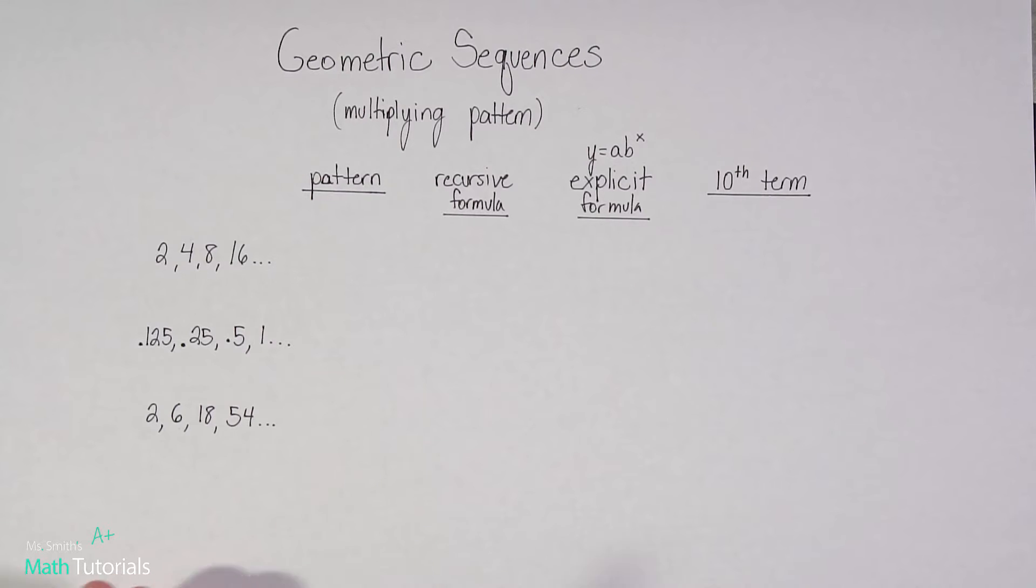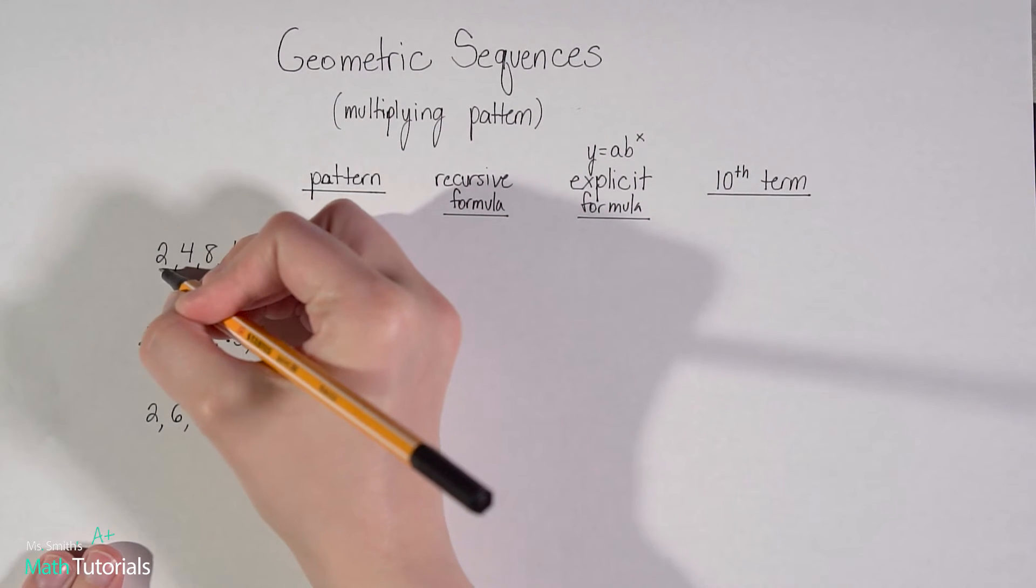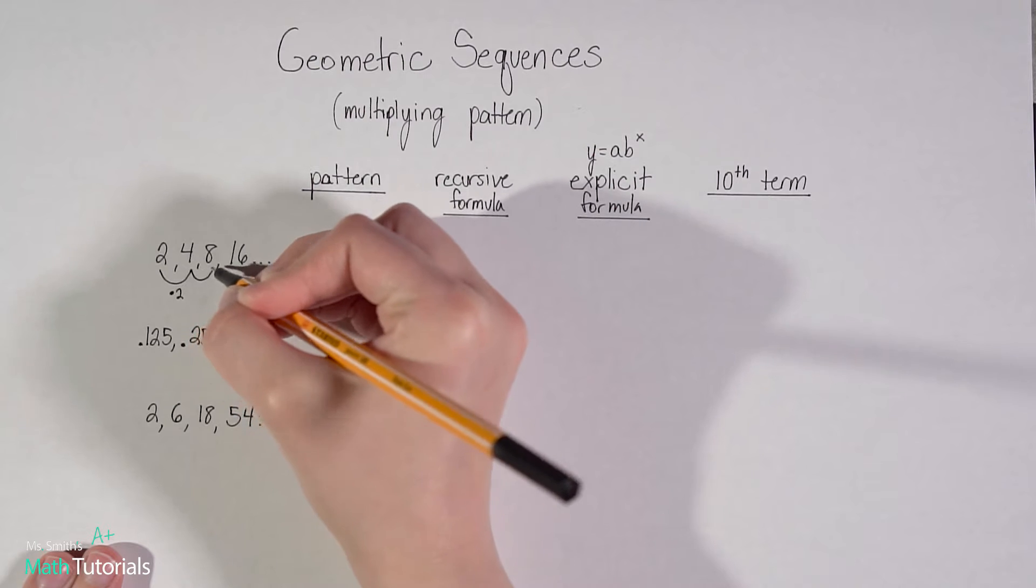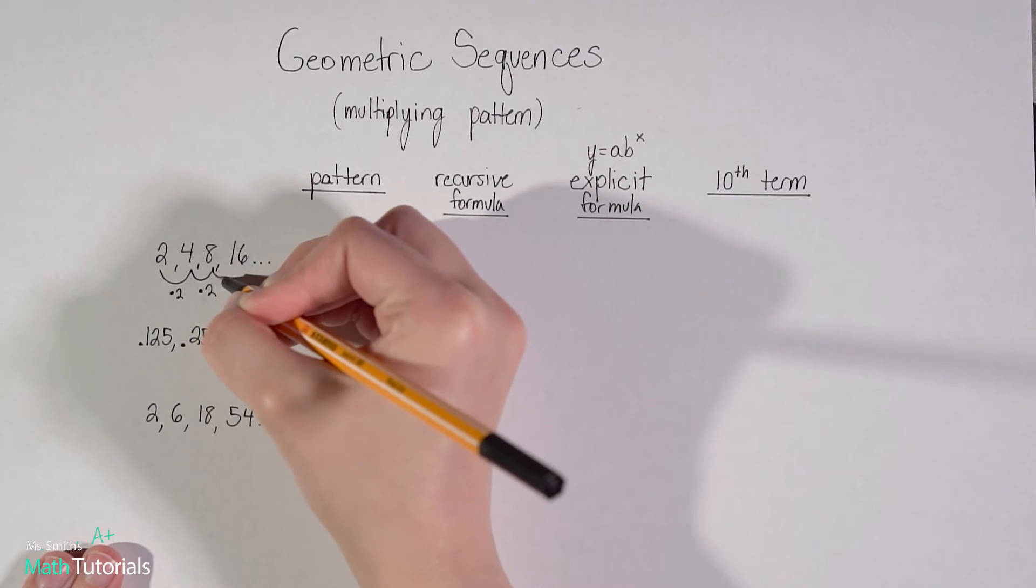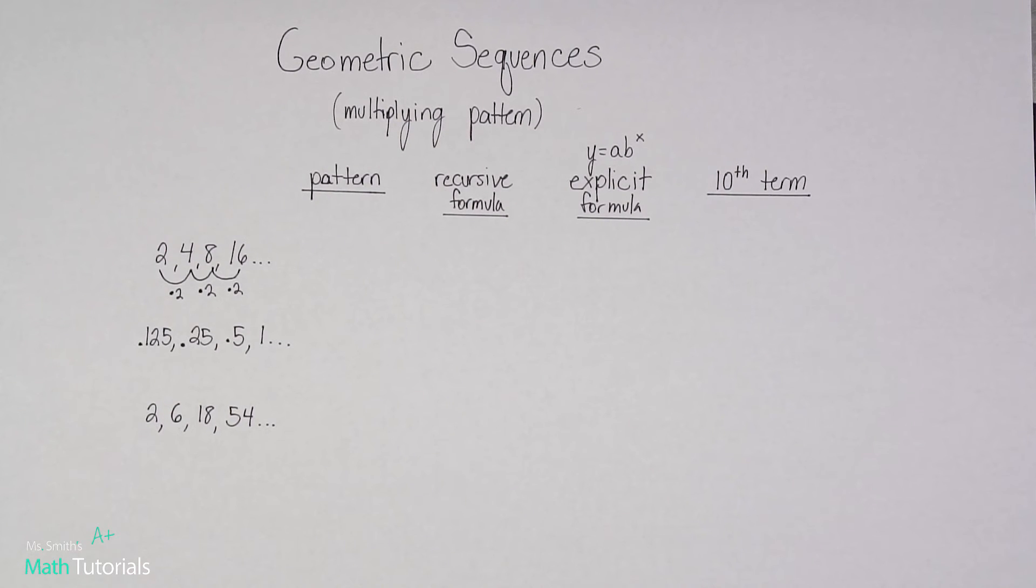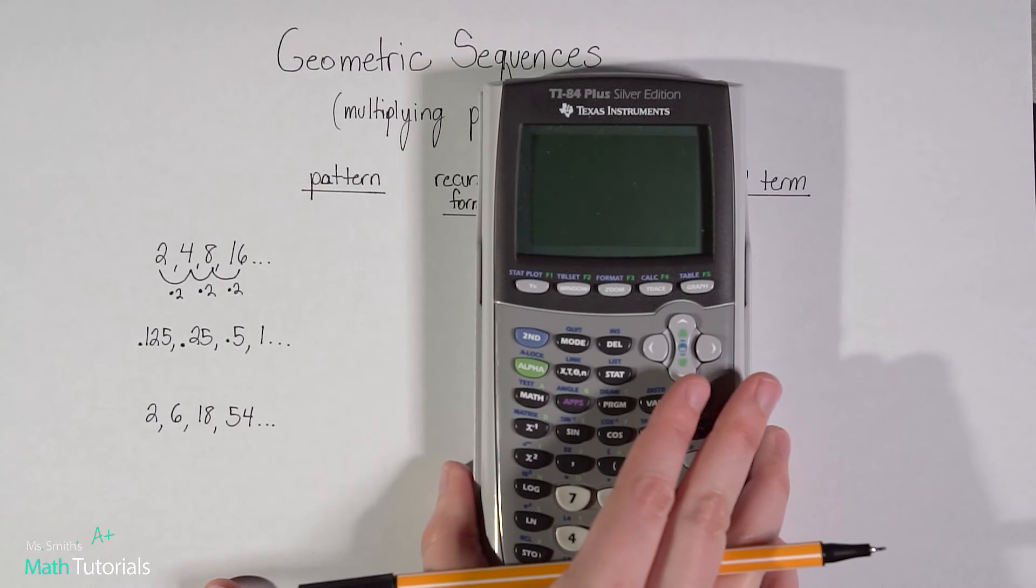Some of you immediately go, okay, I'm multiplying by 2 each time. And if you see that, that's great. To go from 2 to 4, we're multiplying by 2. 4 to 8, we're multiplying by 2. And 8 to 16, we're multiplying by 2. But let's just pretend that you didn't see that. How could we figure out that pattern?